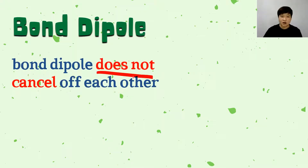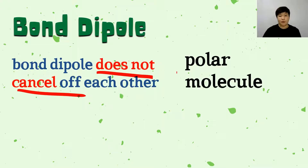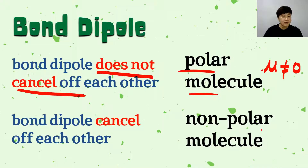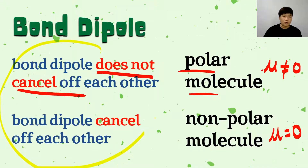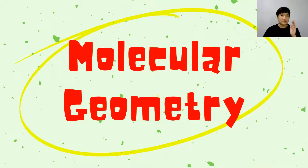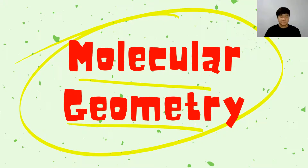When the bond dipoles do not cancel each other out in a molecule, it becomes a polar molecule — because they cannot cancel off each other, there is still dipole moment, so mu is not equal to zero. Vice versa, when bond dipoles can cancel each other, the molecule is non-polar and mu equals zero. Whether bond dipoles cancel depends on the molecular geometry of your Lewis structure.